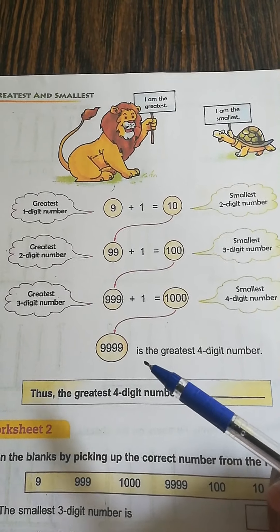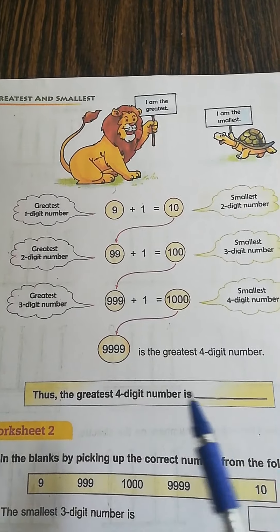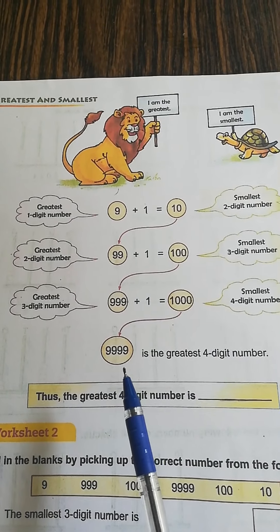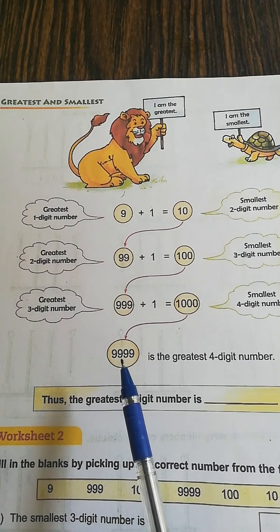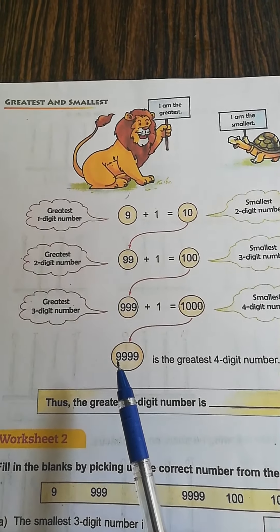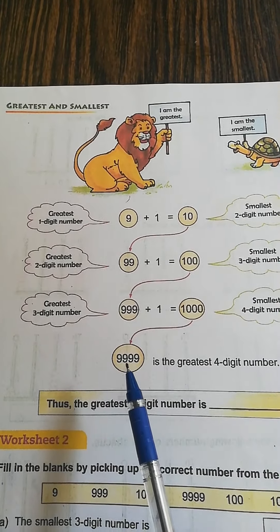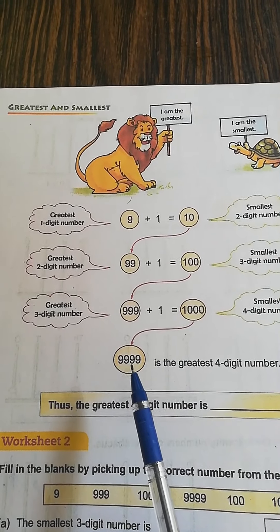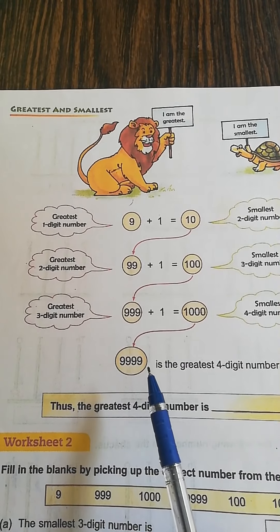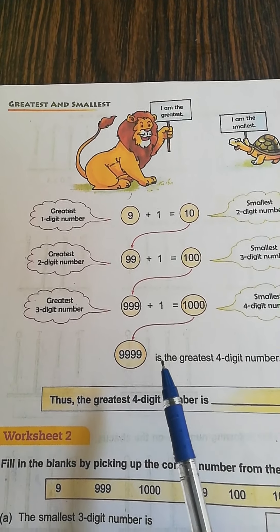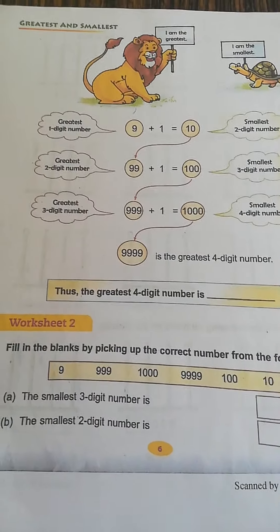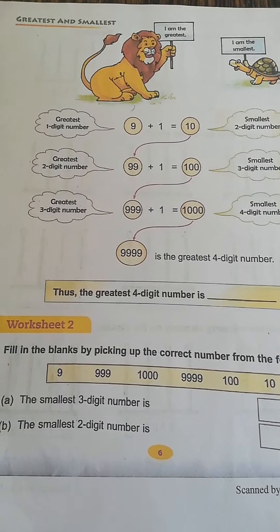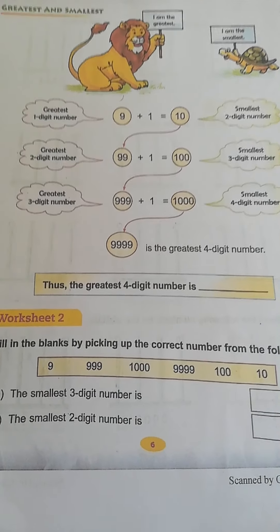What is the greatest four digit number? You can tell me, children. Yes, it is correct — that number is 9999. Good children. Here is a small worksheet for you based on this: greatest and smallest.